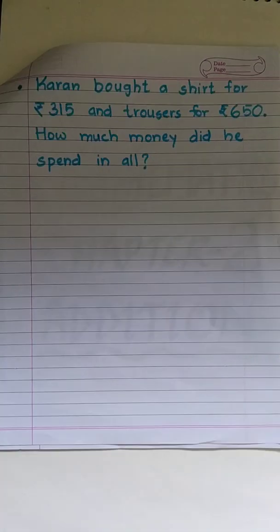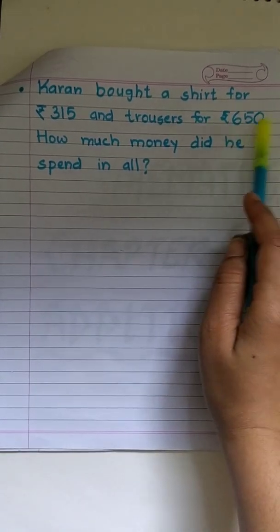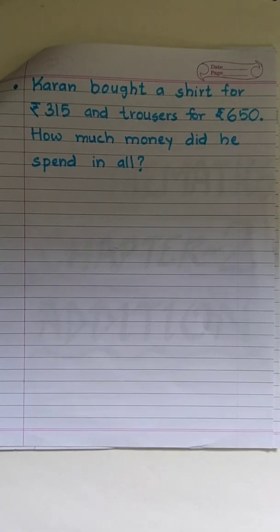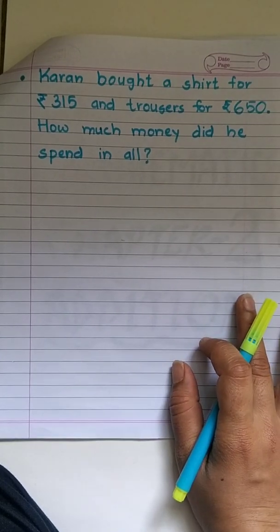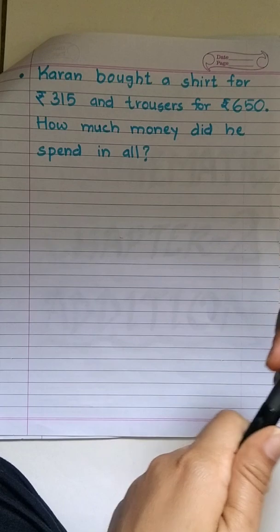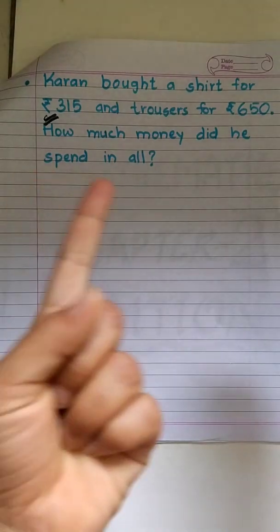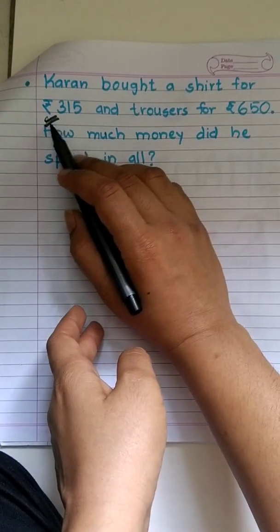Let's move to the next sum now. The new question says Karan bought a shirt for rupees 315 and trousers for rupees 650. Seems Karan had been shopping lately, so he bought a shirt and a pair of trousers for him, ok? The cost have been given. Now how much money did he spend in all? Again we have to find the total of both the amounts that will give us how much money did he spend, right? Now the change over here is we will not use number of for the statement this time. Always remember, when the sum is about rupees we will use amount of or cost of. So when we are buying something we will write cost, otherwise we will use amount instead of number of when we are talking about rupees. Ok?